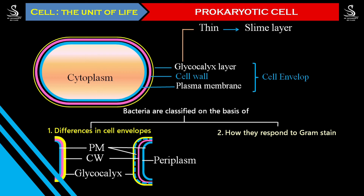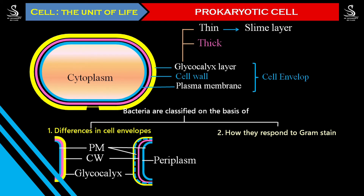If the glycocalyx layer is thin, we call that layer a slime layer. If the glycocalyx layer is thick, we call it a capsule. So some bacteria have a slime layer and some bacteria have a capsule.